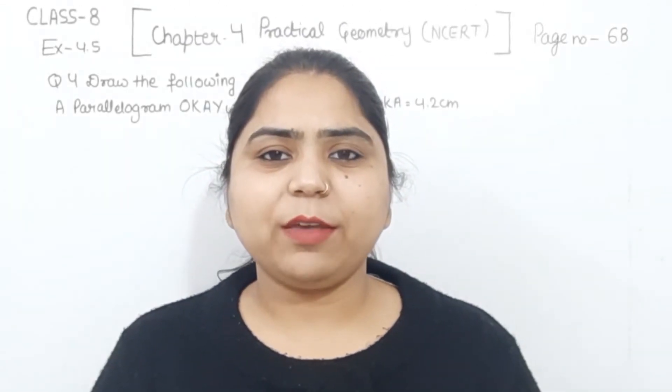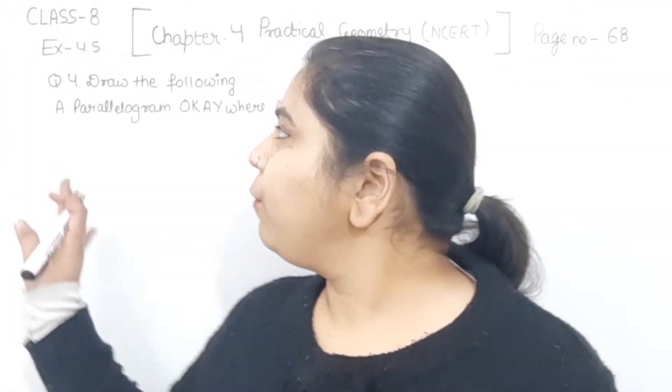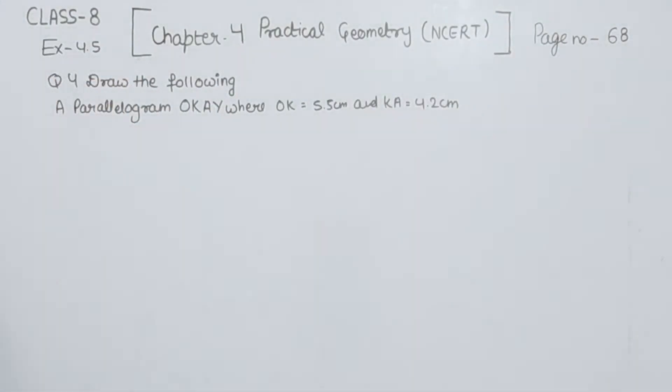Hello everyone, this is Preeti. We are having another question of exercise 4.5, page number 68, question number 4. Draw the following. So we have to draw a parallelogram OKAY where OK is equal to 5.5 cm and KA is equal to 4.2 cm.